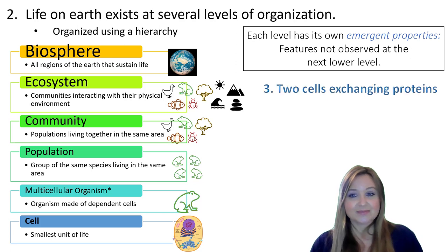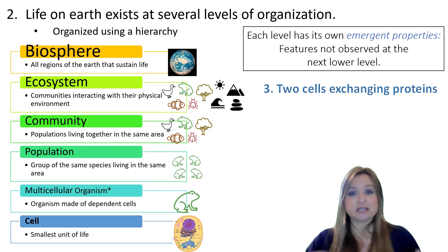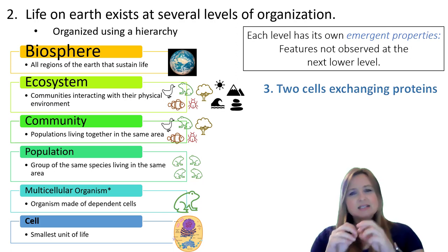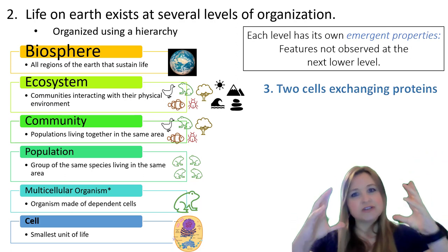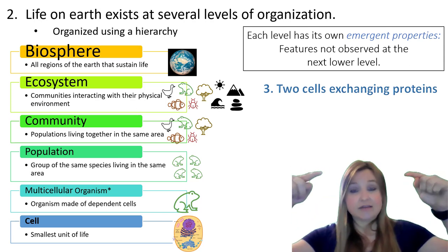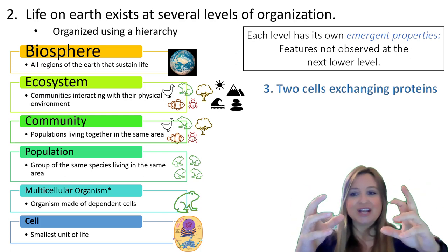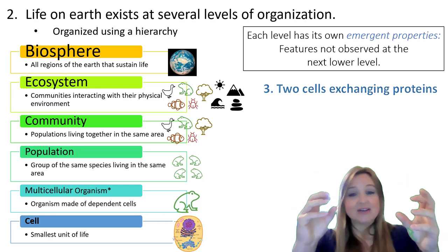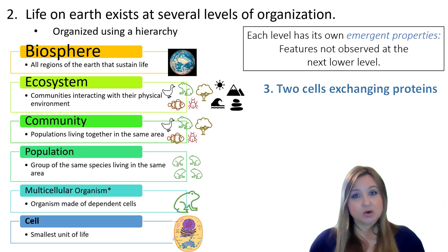Two cells exchanging proteins — which level would we first be able to observe this? Looking at one cell, we might see a cell secrete something, but we don't know what's happening to it. If we move up to the multicellular organism level, now we can see those cells dependent upon each other — one cell secreting something that is being taken in, or endocytosed, by another cell. So two cells exchanging proteins is a property we see at the multicellular organism level.